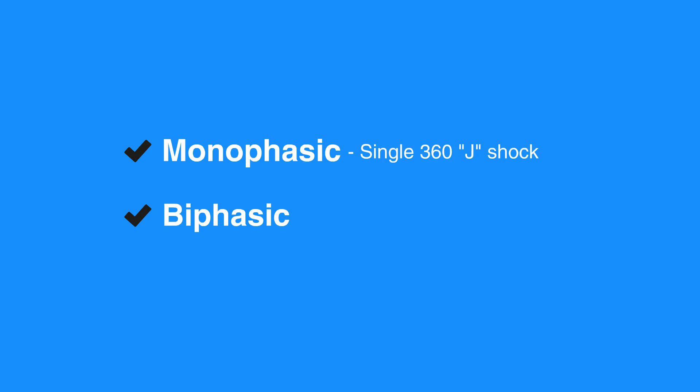Biphasic defibrillators have a variety of waveforms and have been shown to be more effective for terminating a fatal arrhythmia. When using biphasic defibrillators, providers should use the manufacturer's recommended energy dose. Many biphasic defibrillator manufacturers display the effective energy dose range on the face of the device.